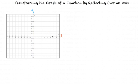The x-axis separates negative y values from positive y values. For every point along the x-axis, the y value will be zero. For points above the x-axis, the y values will be positive, and for points below the x-axis, the y values will be negative.